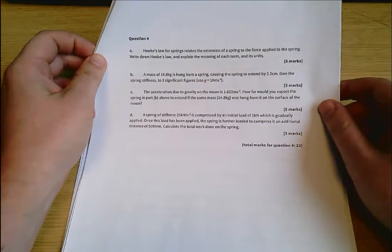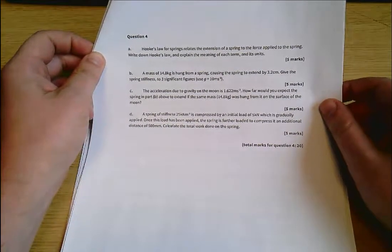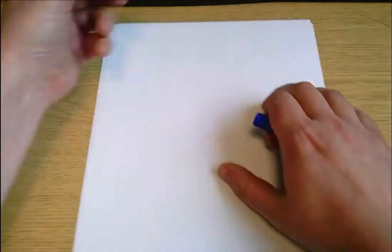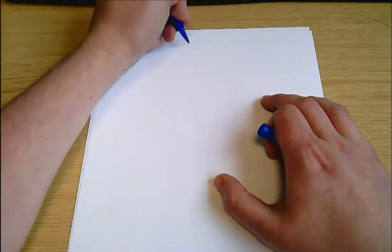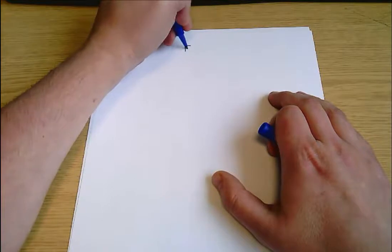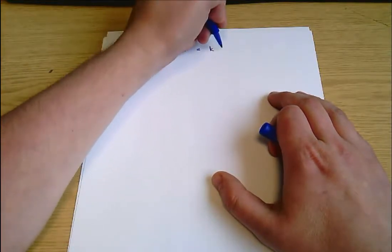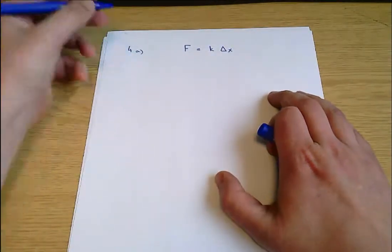Part A says Hooke's law for springs relates the extension of a spring to the force applied to the spring. Write down Hooke's law and explain the meaning of each term and its units. So for A you have to remember that Hooke's law says the force that a spring applies is proportional to the extension of the spring and we write that as F equals k delta x.